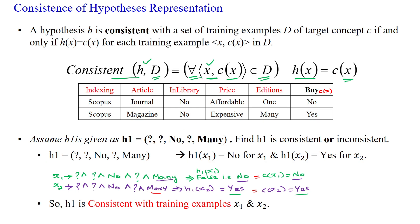We will take the given hypothesis H1, which is already given in the problem statement with five values. We have to see whether H1 is consistent or inconsistent with respect to the given dataset D, which has two training samples: X1 and X2.